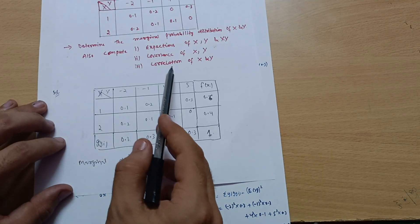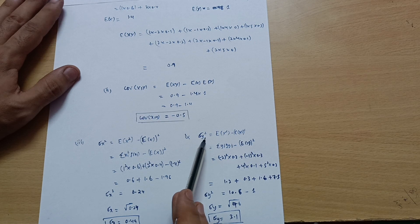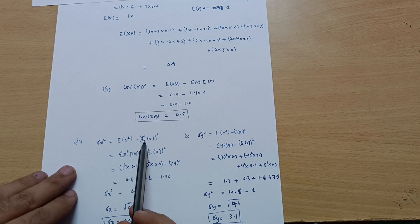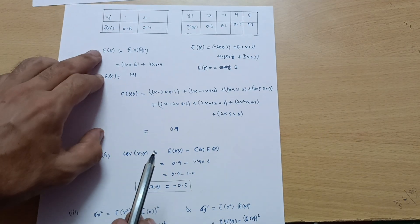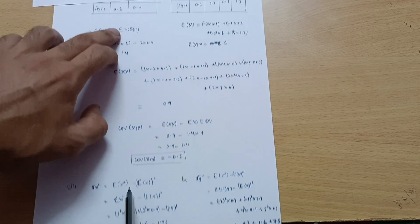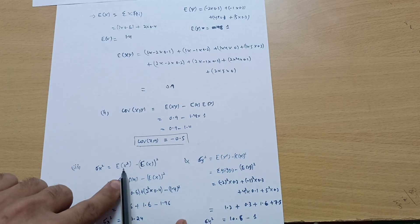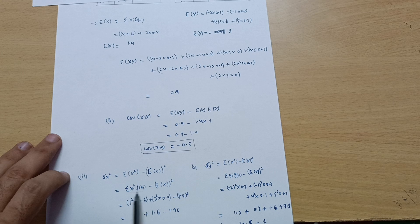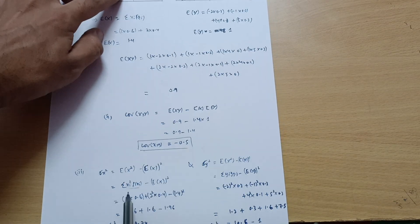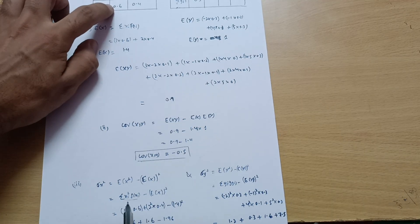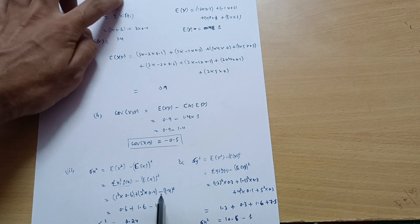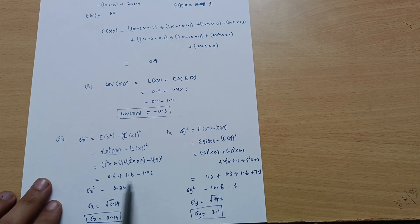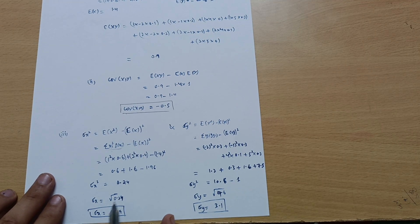To calculate the third part, the correlation of X and Y, we first need σ_x² and σ_y². σ_x² equals E[X²] minus (E[X])². For E[X²], instead of x_i we take x_i² times f(x_i): 1² times 0.6 plus 2² times 0.4, minus 1.4 squared. Calculating this gives σ_x² equal to 0.24, so σ_x equals the square root of 0.24, which is approximately 0.49.